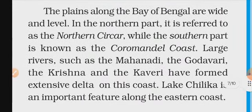The plains along the Bay of Bengal are wide and level. When we talk about the east, the plains are comparatively wide. Why? Because rivers form deltas here — the rivers are very voluminous and carry sediment. When the rivers drop out their sediment, the area is eroded and forms plains.